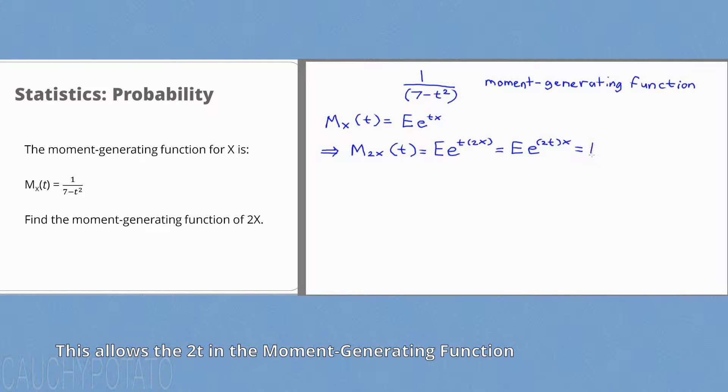Now because of the form for moment generating functions, we can move the constant 2 inside with the t. Now using the moment generating function of x with 2t, we have the moment generating function of 2x now.